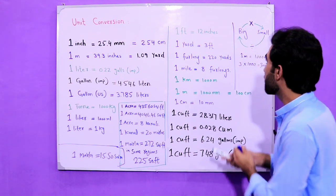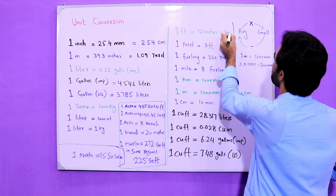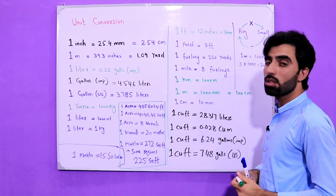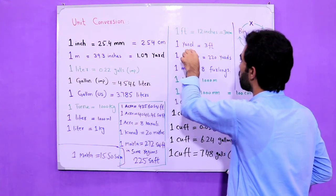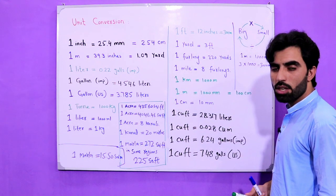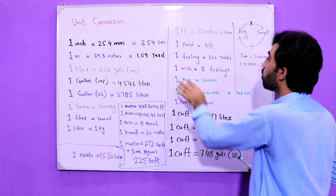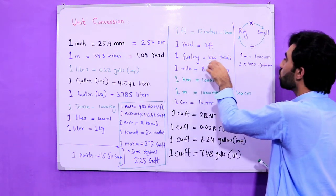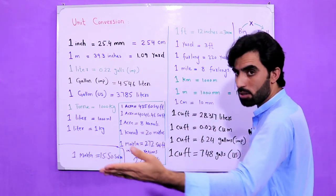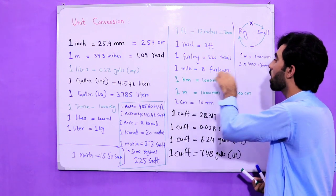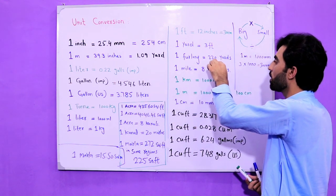In one foot we have 12 inches, and one foot also equals 30 centimeters. In one yard we have three feet. In one furlong we have 220 yards.